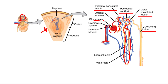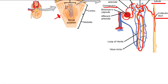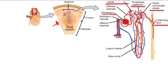If you keep going past the loop of Henle, you're now distal to the glomerulus, so you're at the distal convoluted tubule — again, convoluted. Going further down, you eventually reach the collecting ducts. So that is one nephron, and I want to emphasize that this is the functional unit of the kidney.